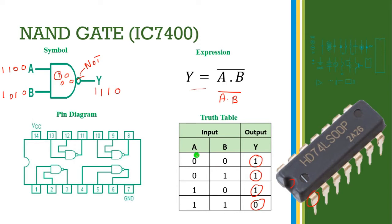If any one of the inputs becomes 0, the output value becomes 1. If any one of the input values becomes low, the output value becomes high. If both input values become 1, the output value becomes 0. This is the NAND gate truth table.